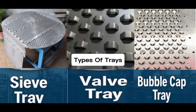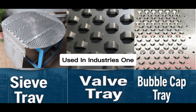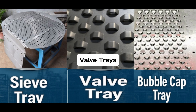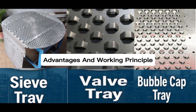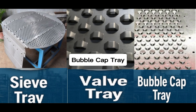There are three main types of distillation trays used in industries: bubble cap trays, sieve trays, and valve trays. Each type has its own design, advantages, and working principle. Let's discuss them one by one in detail.